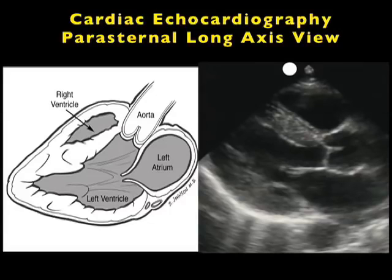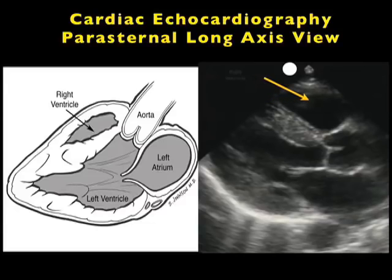Here's a nice pictorial to the left, and what we see is that the most superficial structure will be the right ventricle. Notice that the right atrium is not seen from this plane. Directly posterior to the right ventricle will be the left ventricle, and to the right of the left ventricle will be seen the left atrium. We can also see the mitral valve in between the left atrium and the left ventricle, and a little bit of the aorta above the left atrium.